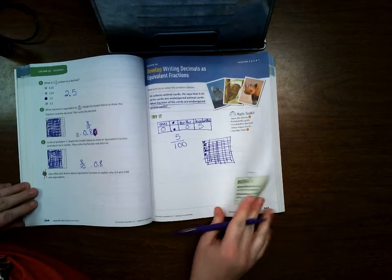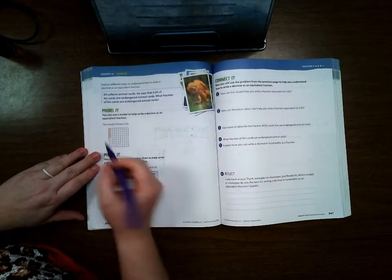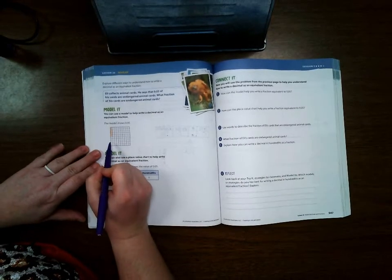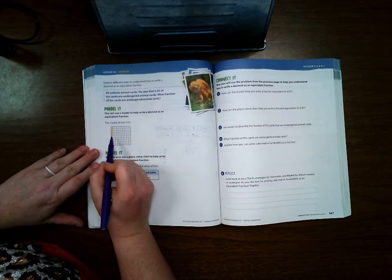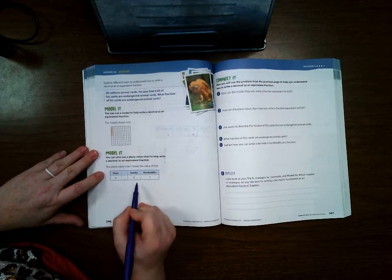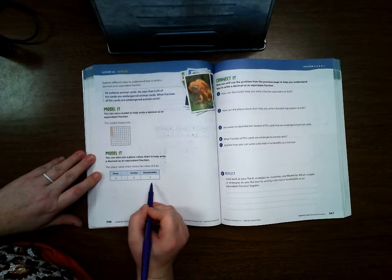Okay, let's turn to page 546. Right here is a better image of what it looks like with those shaded, and then down here is what it looks like when you write it in a place value chart.